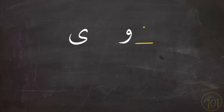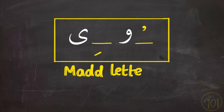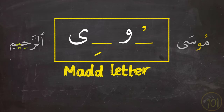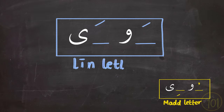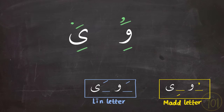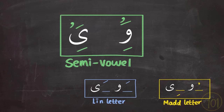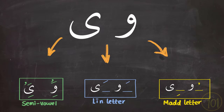To understand these rules, we need to understand how these letters occur in Arabic. When these letters have سكون on them and they are preceded by a short vowel of the same nature, we call them مد letters, like موسى and الرحيم. And if they have سكون on them but they are preceded by فتحة, then we call them lean letters, like قريش and مولا. And when these letters have تشكيل on them, we call them semi-vowels because they now resemble consonants in accepting short vowels, like ولد يصلح.